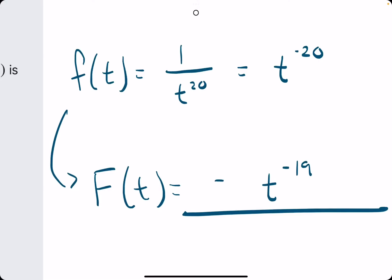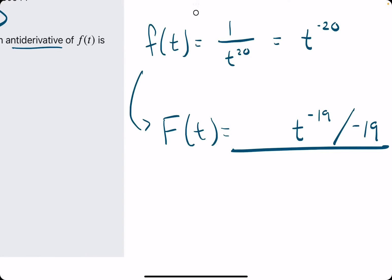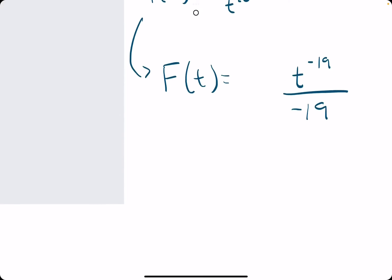And then, instead of multiplying by negative 19 out in front, here is the point where we divide by negative 19. Altogether, what we have is, let's rewrite it like this. We have t to the negative 19th over negative 19. That's pretty much it.